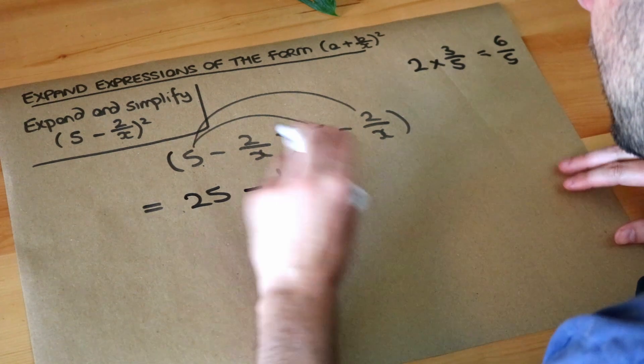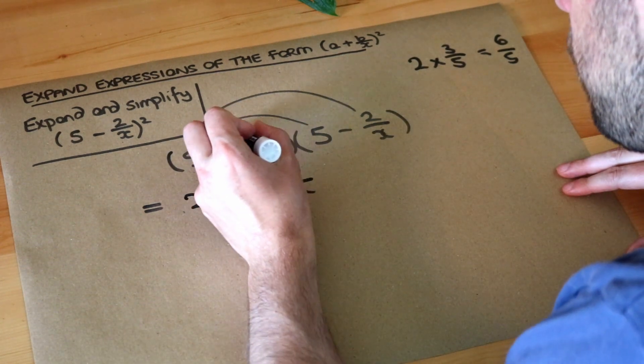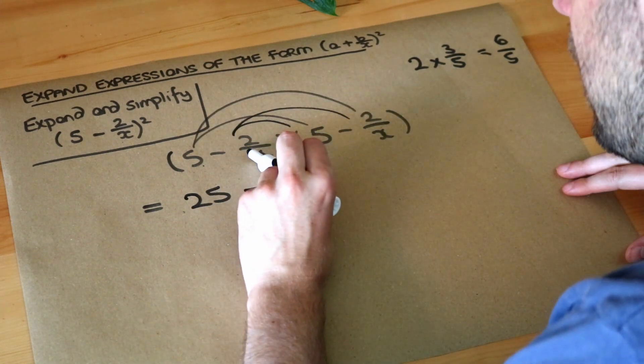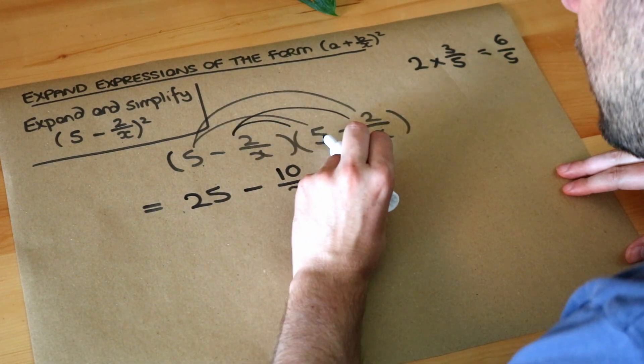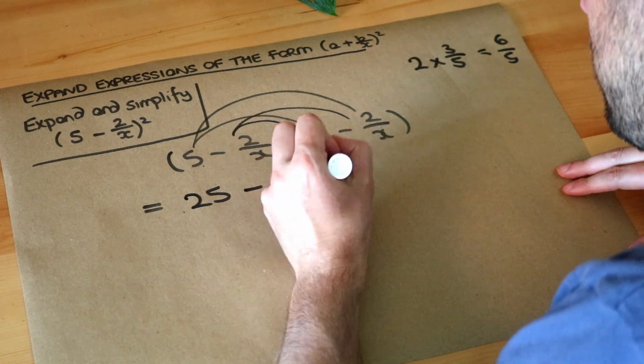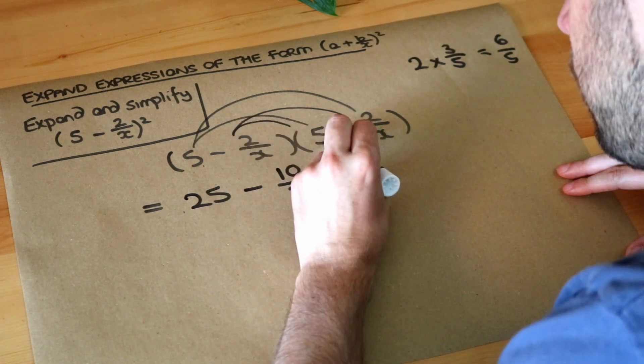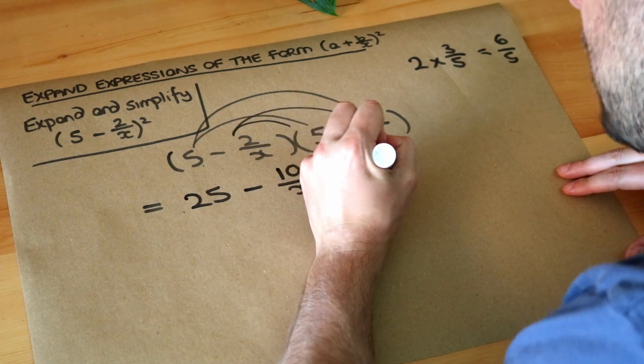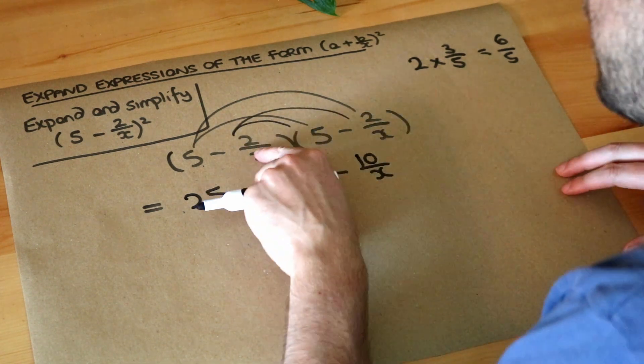So we've done that and now we do the second thing in each bracket multiplied by each thing in the second bracket. So we've got negative 2 over x times 5, where negative times positive is negative, and we've got 5 times 2 so that just becomes 10 over x.